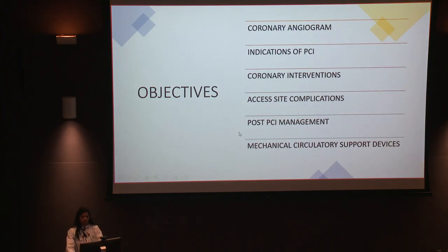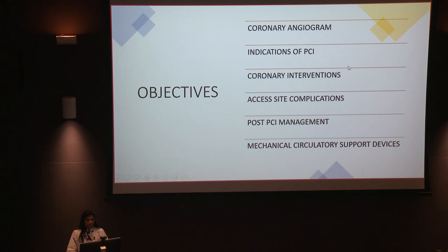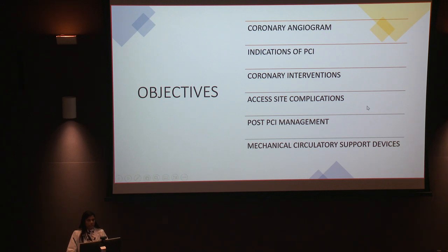Today we're going to talk about how we do a basic coronary angiogram. What are the settings when we actually need to do an intervention, and what kind of coronary interventions do we do? How interventions have evolved over the past few years, and when we do interventions — whether we go through the radial artery or femoral artery access. We'll touch on complications, how we manage patients after an intervention, and how long we have to treat them with blood thinners. We'll also briefly cover mechanical circulatory support devices.